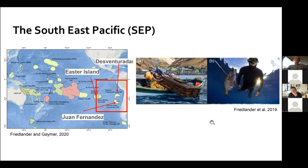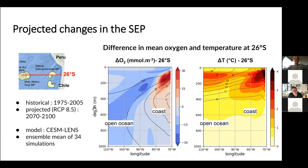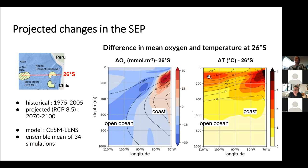What are the projected changes in the Southeast Pacific? Two vertical sections at 26°N show differences in oxygen concentration and temperature between historical and projected values from surface to depth. For oxygen, the black line represents the mean projected oxygen isocontour at 45 mmol/m³, representing the OMZ limit. There's mainly a loss of oxygen, except in the OMZ, especially at the oxycline level, with a gain of more than 20 mmol/m³. For temperature, only positive changes occur throughout the entire water column, especially at the thermocline level, with a gain of 2 to 4 degrees by 2100.